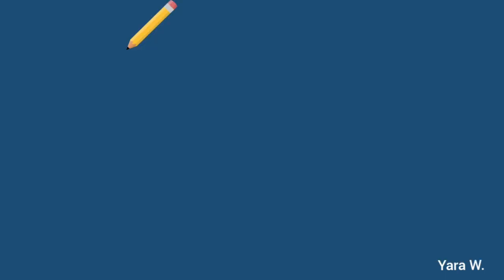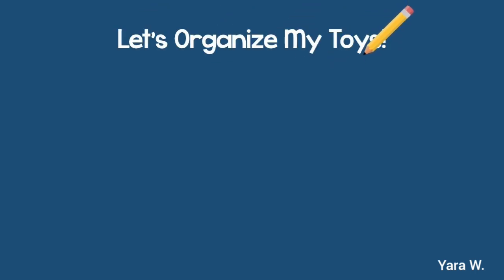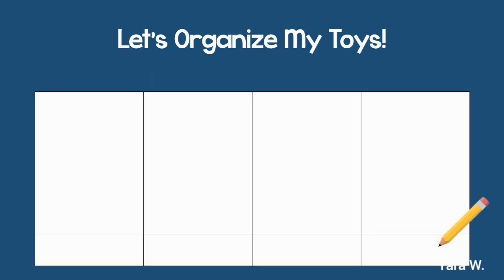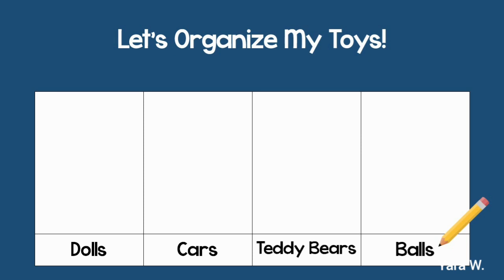He gets a pencil and paper and starts writing down his plan: Let's organize my toys. I will draw a special table called a graph to organize all of my toys. Now let's see — I have dolls, cars, teddy bears, and footballs.